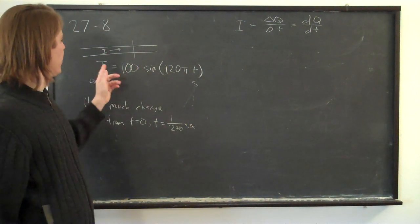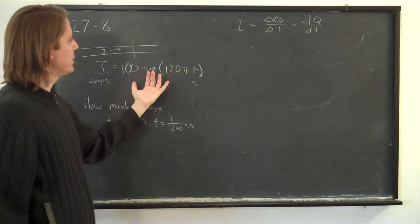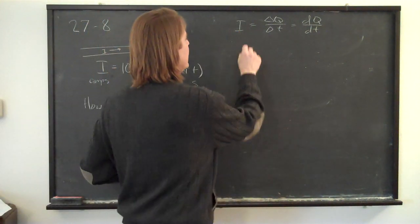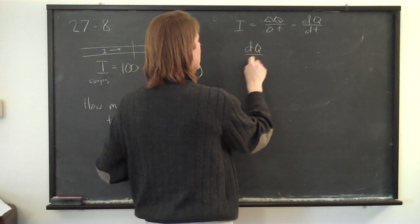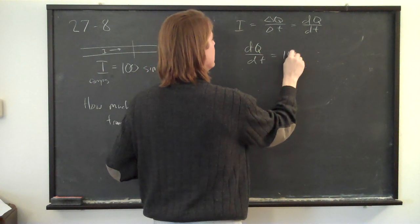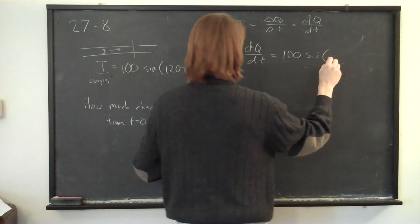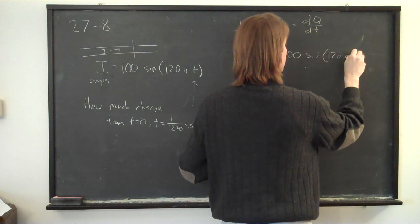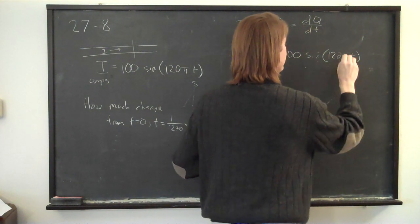We now know that the current, this continuous expression, isn't just equal to I, it's equal to dQ dt. So we can write dQ dt equals one hundred sine of one twenty pi times T.